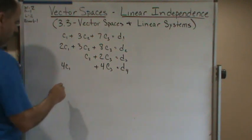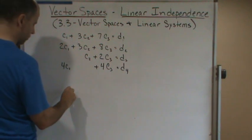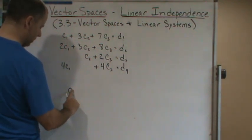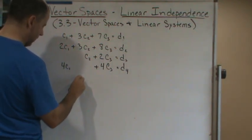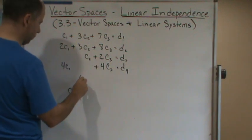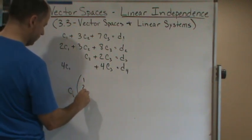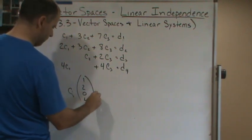So in other words, we're looking at a solution to this, right? So the columns here is just going to be 1, 2, 0, 4, right?